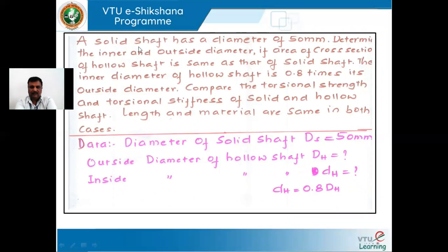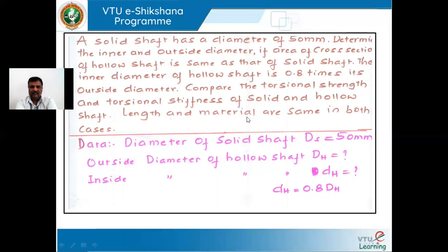Next important problem: a solid shaft has a diameter of 50 mm. Determine the inside and outside diameter of a hollow shaft such that the area of cross-section of the hollow shaft equals that of the solid shaft. The inner diameter of the hollow shaft is 0.8 times the outside diameter. Compare the torsional strength and torsional stiffness of both shafts, given that both are of the same length and made of the same material.